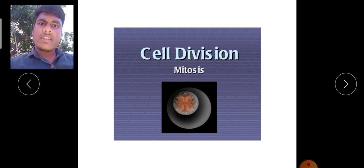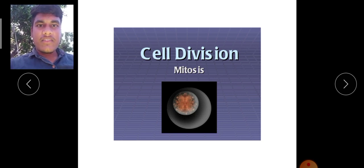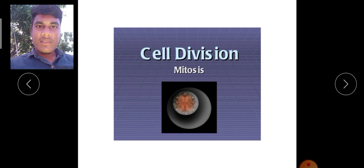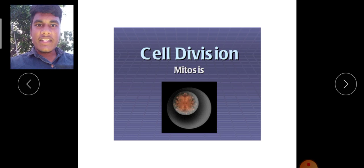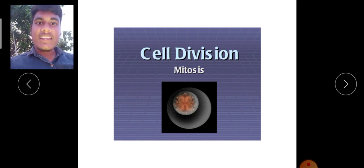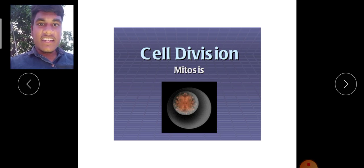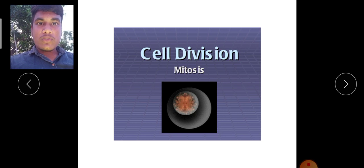What is the use of cell division? I will give you one example. At the time of your birth, what is your weight? Maybe 2 or 3 kg. But now, what is your weight? 60 to 70 kg — some persons have 70, 80, 90 also. How did they gain the weight? Only because of cell division — cell division takes place in our body and gives growth to our body.